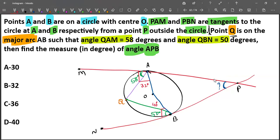So if this is 32 and this is 40, this angle is the sum of those two angles, which is 72 degrees. Or you can make it as 180 minus 58 plus 50.